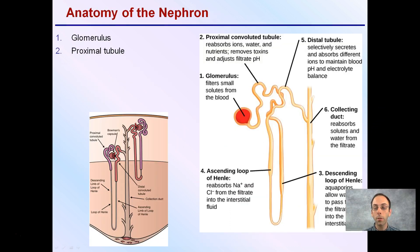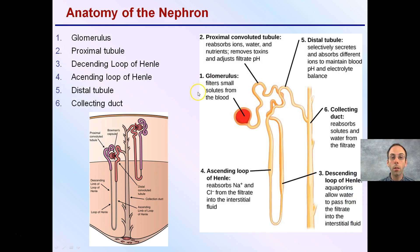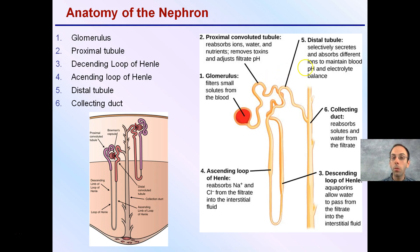Here's a quick anatomy summary of the nephron. The glomerulus filters small solutes from the blood, which then leads to the proximal convoluted tubule, the PCT, where ions, water, and nutrients can be reabsorbed. Toxins will be removed and the filtrate pH will be adjusted to maintain proper homeostasis.